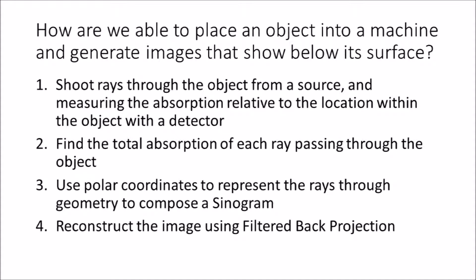First, we shoot rays through the object from the source and measure the absorption using a detector. Then, we find the total absorption of each ray that passes through the object. Next, we use polar coordinates to assign the total absorption to each ray to the location of the ray relative to the center of the object and graph them to compose a sinogram. Lastly, we reconstruct the image using filtered back projection to get a clear image of the object.